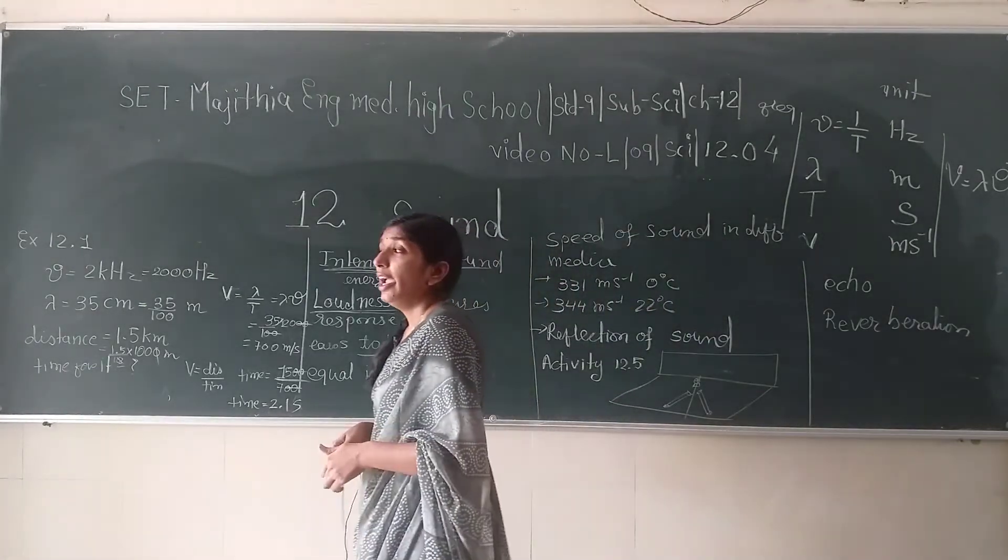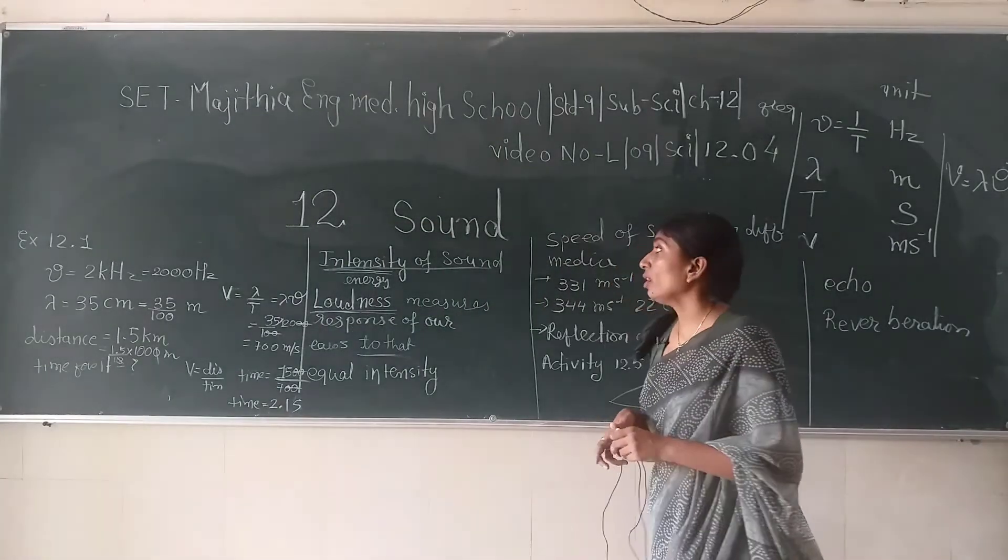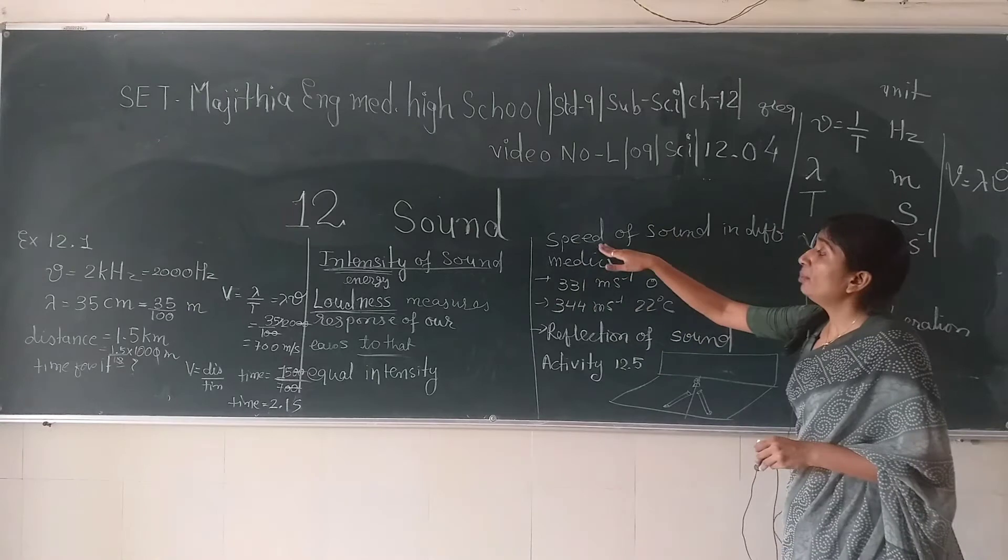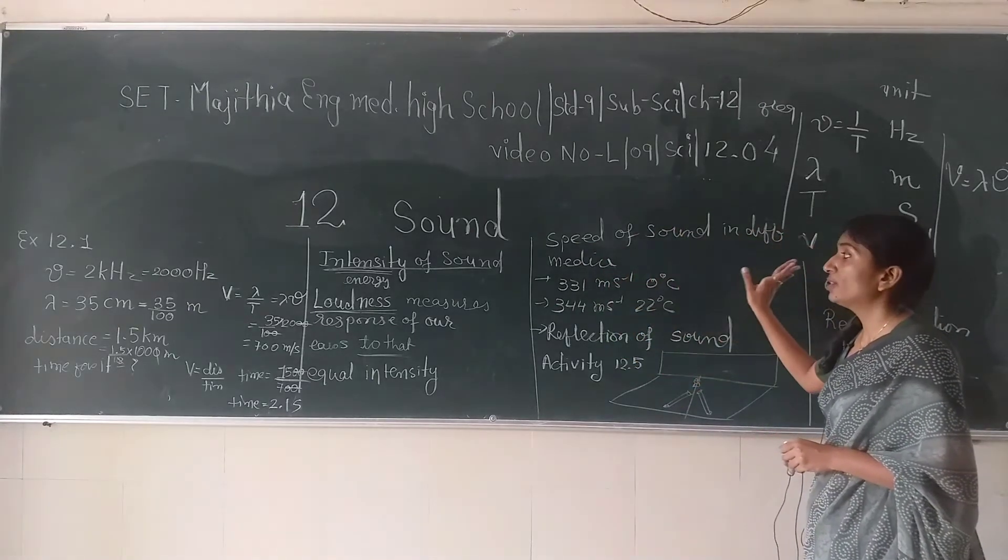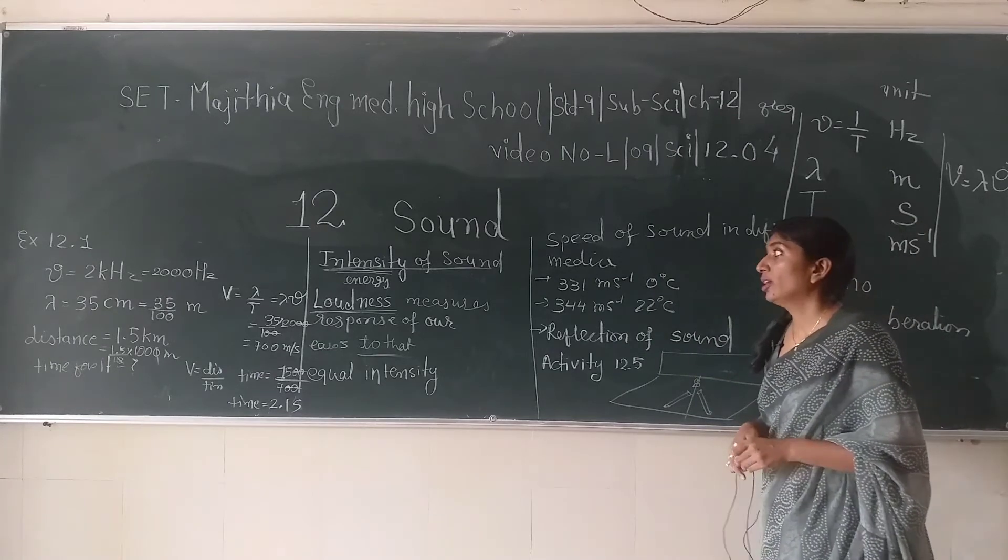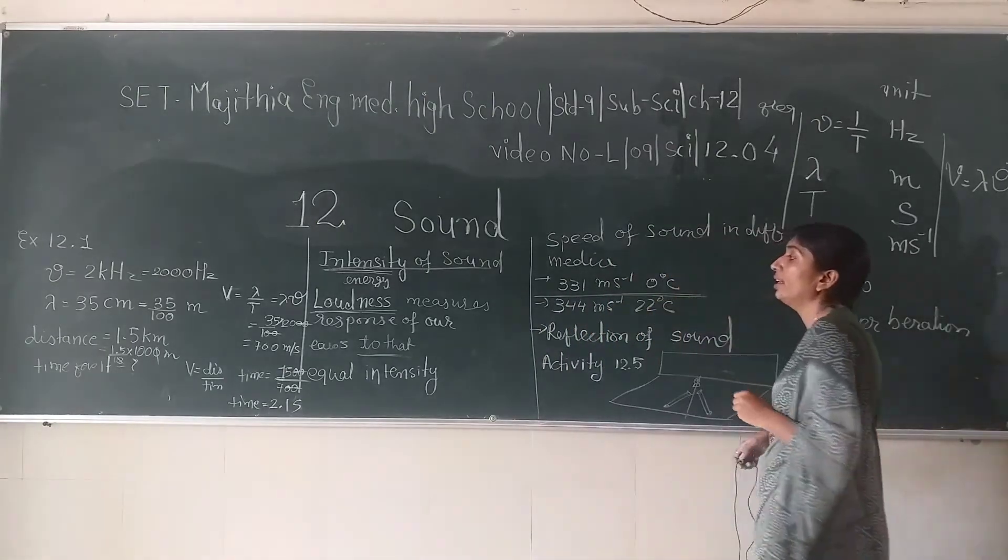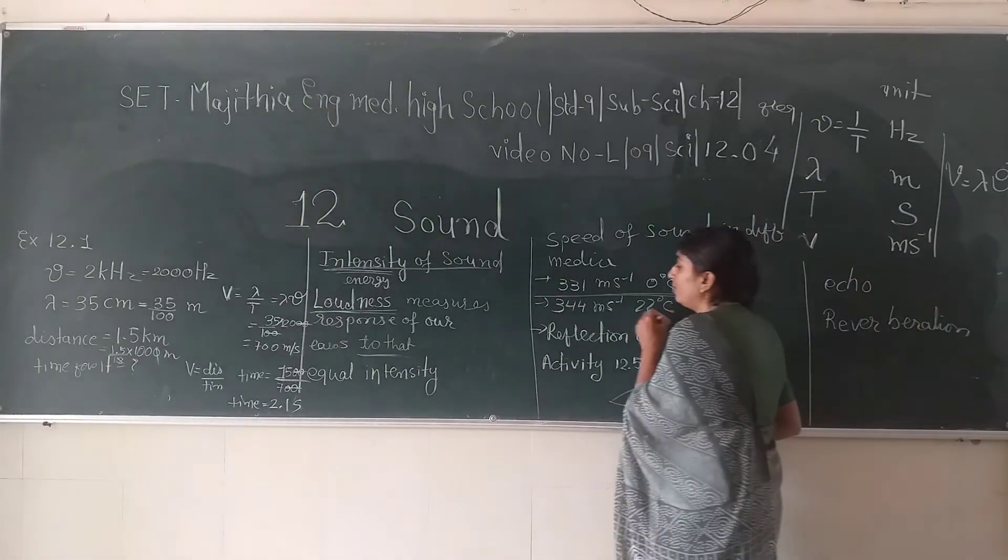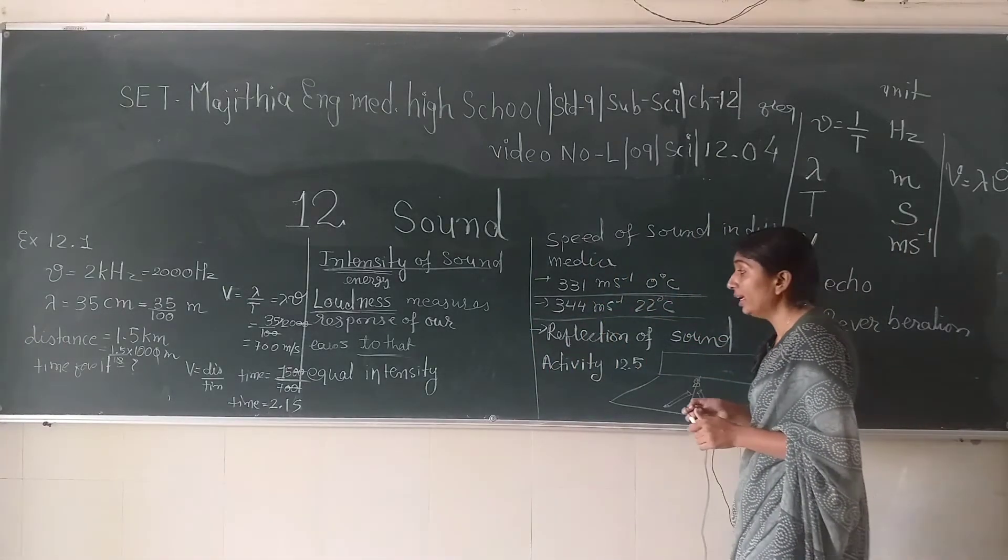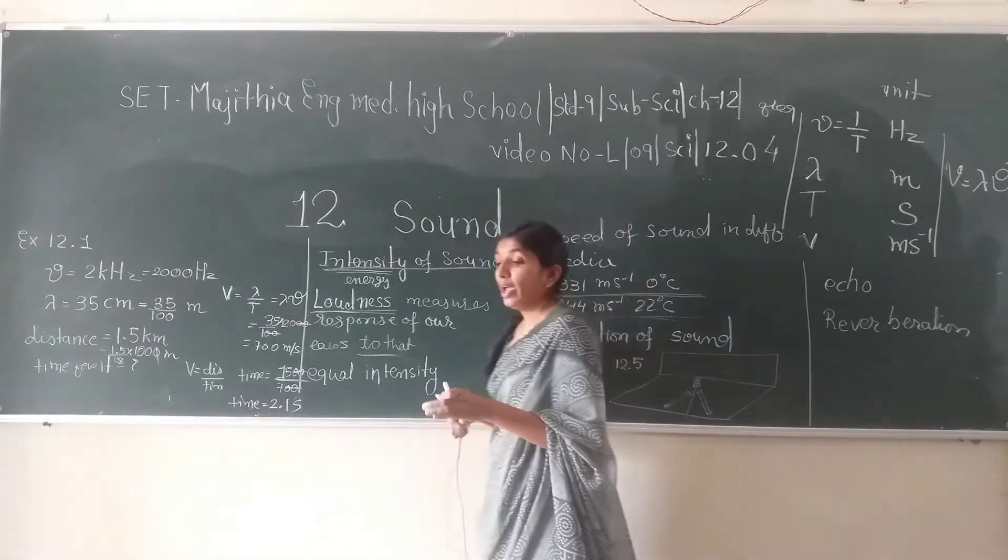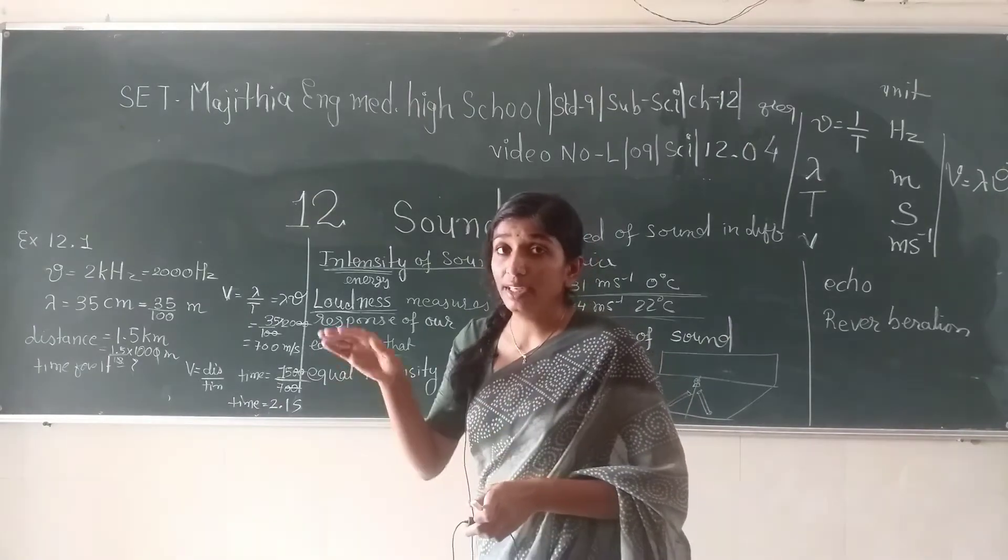Different media have different speeds of sound traveling through it. In air at 0 degree Celsius, the speed of sound is 331 meter per second, while at 22 degrees Celsius it is 344 meter per second. You have already given a chart in your textbook, so see that chart.